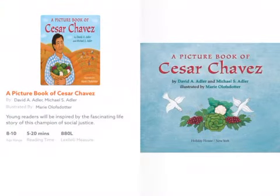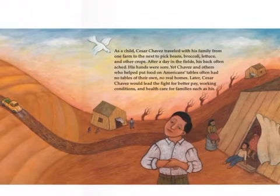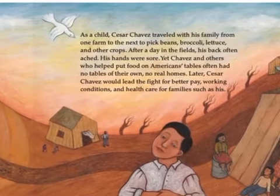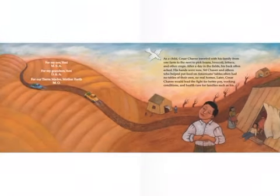We'll start reading his childhood. So, a picture book of Cesar Chavez. As a child, Cesar Chavez traveled with his family from one farm to the next to pick beans, broccoli, lettuce, and other crops. After a day in the fields, his back often ached and his hands were sore. Yet Chavez and others who helped put food on Americans' tables often had no tables of their own — no real homes. Later, Cesar Chavez would lead the fight for better pay, working conditions, and health care for families such as his. We're already getting to see here that as a young child, he was a farmer, and his family had struggles.